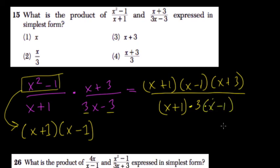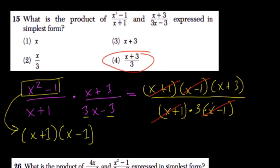So notice that the x plus 1's cancel out, the x minus 1's cancel out. We have x plus 3 over 3, or choice 4. It's always trying to cancel out.